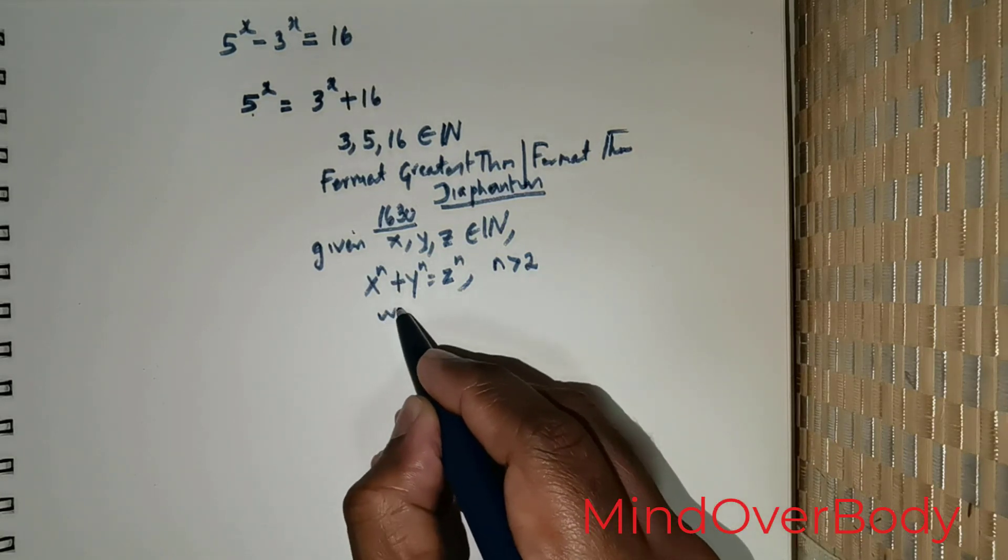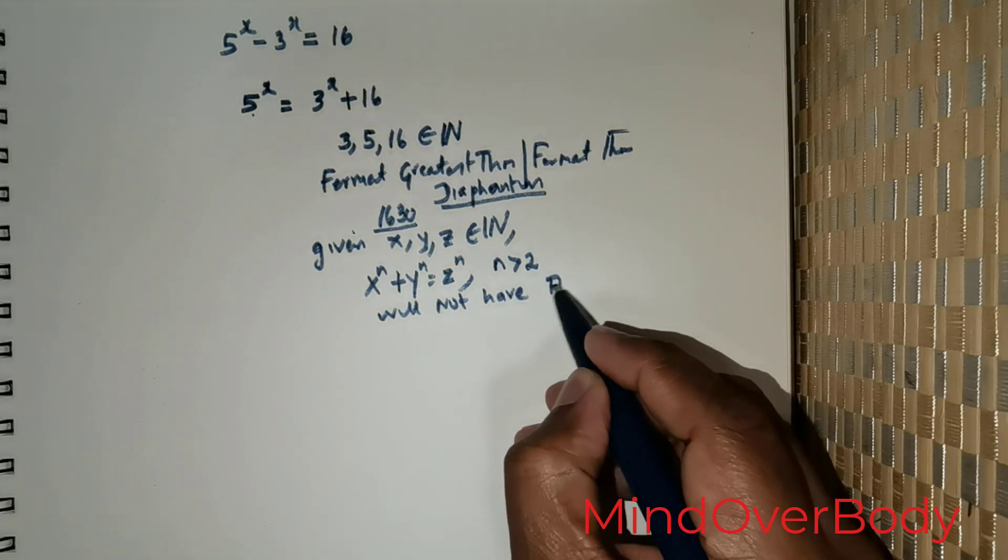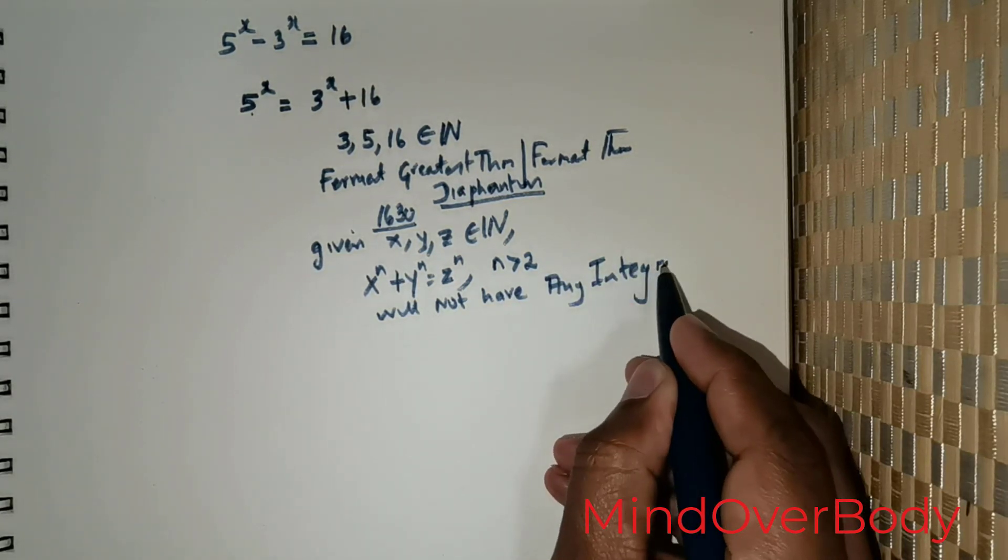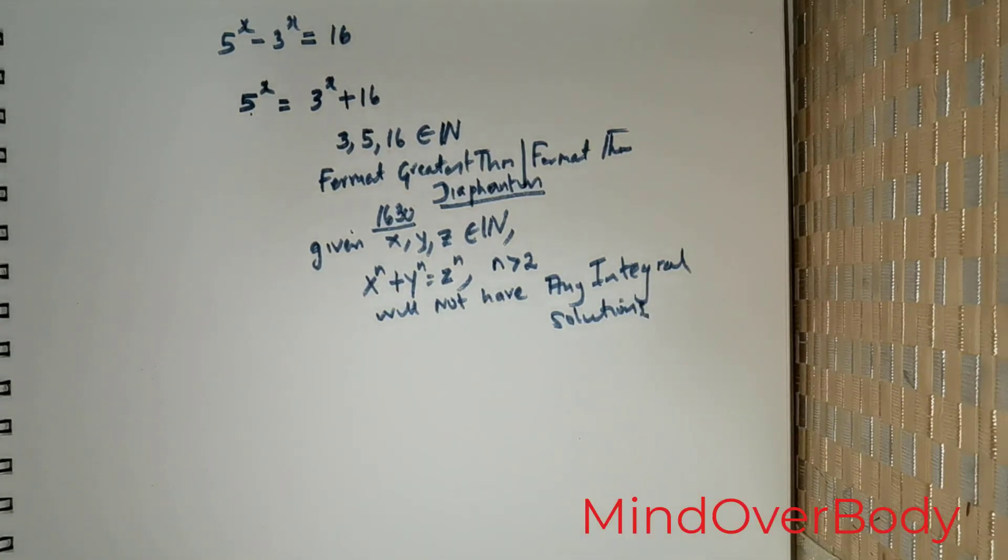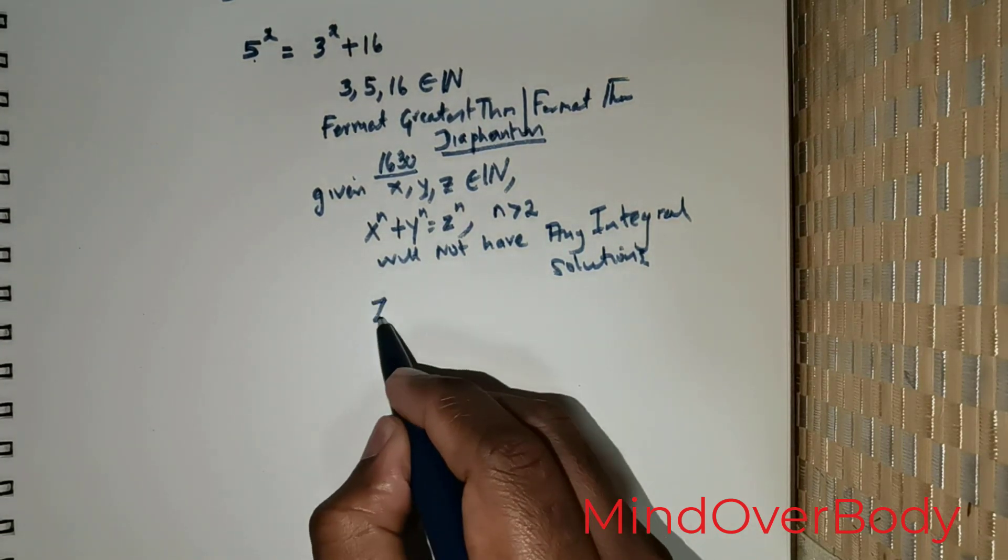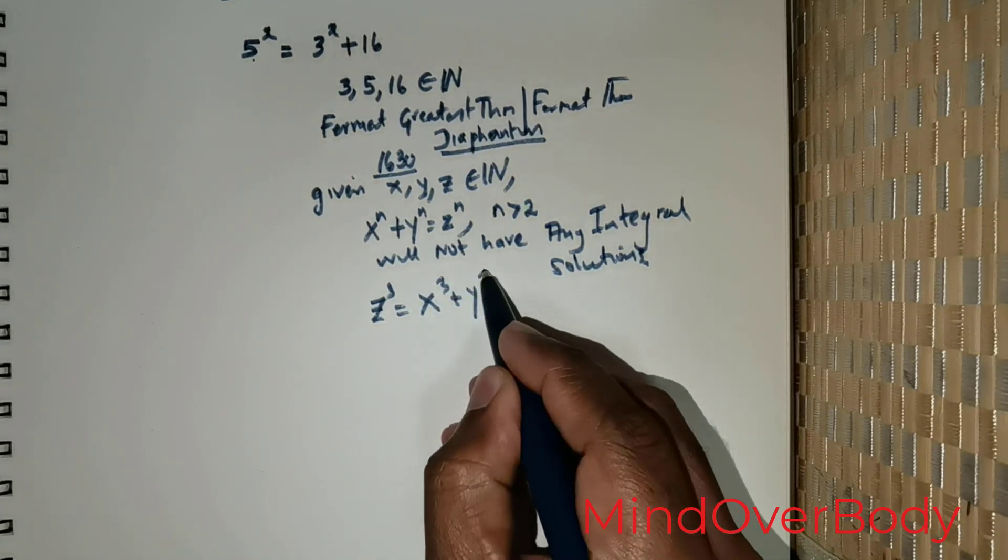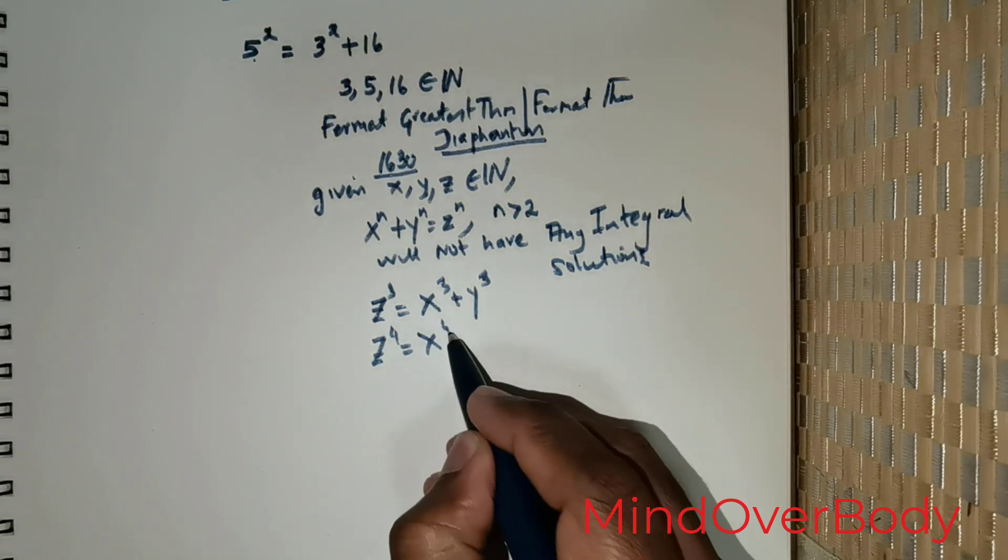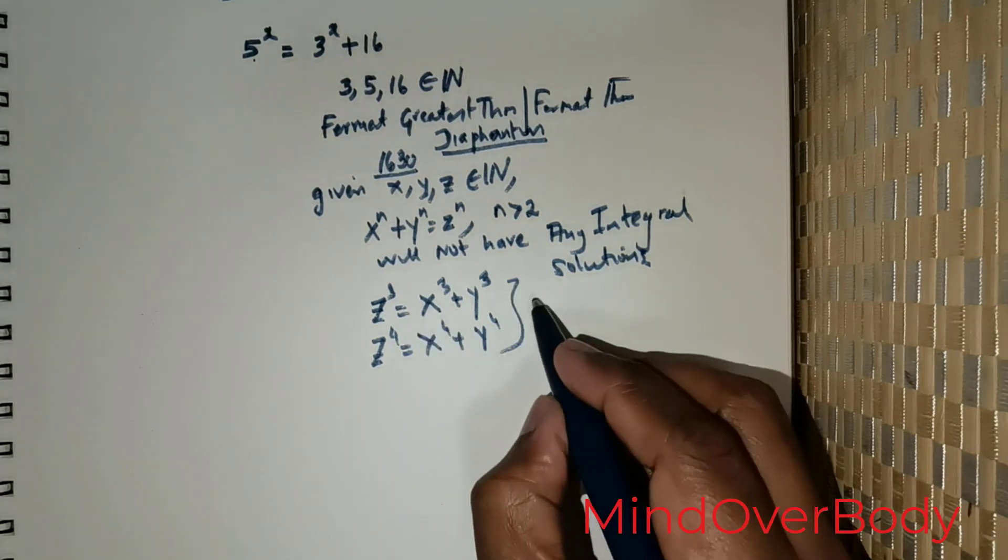Now, what is the meaning of this? It means you will never be able to find a cube that would be the sum of two cubes. You will never be able to find a fourth power that would be the sum of fourth powers, and so on and so forth.